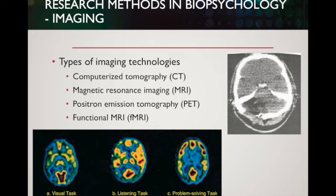More recently, we've started using imaging technologies such as CT scans, MRIs, PET scans, and fMRIs, which allow us to look at either brain structure or brain function — specifically what areas of the brain are using more oxygen or glucose. With fMRIs and PET scans, we can show images or give participants tasks such as a visual task, a listening task, or a problem-solving task, and see what parts of the brain light up and whether certain areas activate more during certain kinds of tasks.